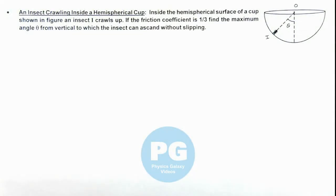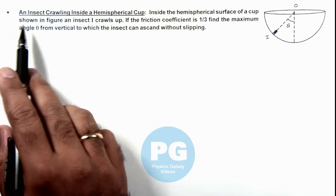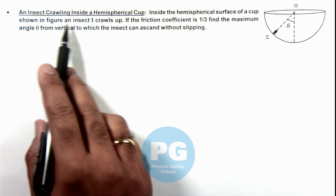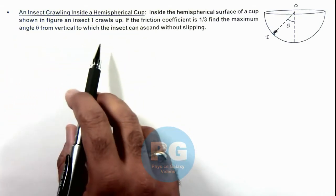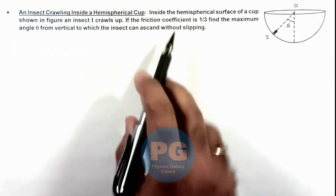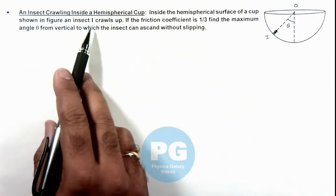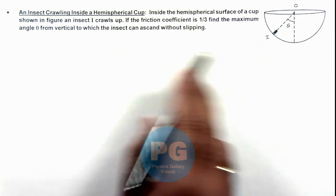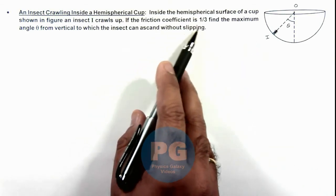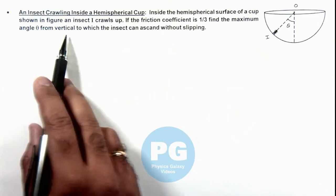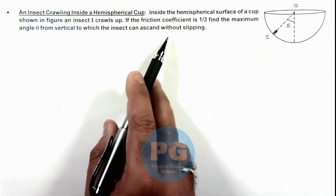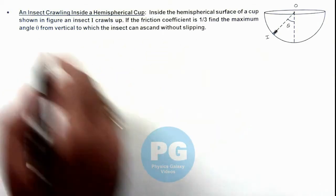In this illustration, we'll analyze the situation when an insect is crawling inside a hemispherical cup. We are given that inside the hemispherical surface of a cup shown in the figure, an insect crawls up. If the friction coefficient is 1/3, we are required to find the maximum angle theta from vertical to which the insect can ascend without slipping.